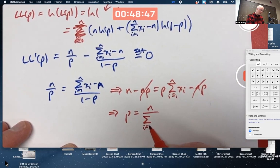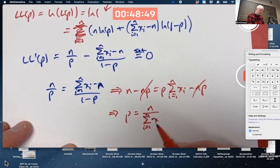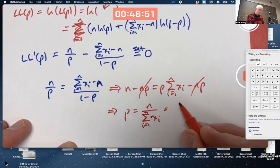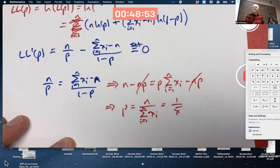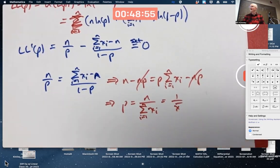We're left with n equals P times the summation. So I guess P is n over the summation. That's a little strange looking, until you realize, hey, that's the same as 1 over little x bar. Just like we got with the method of moments.